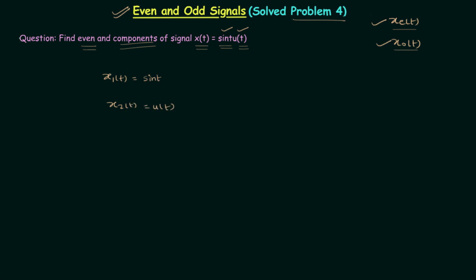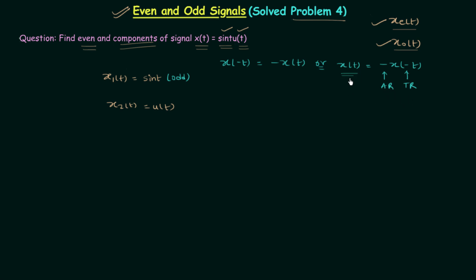We already know sin(t) is an odd signal because it is anti-symmetric about the y-axis. We can check the condition of odd signals: x(-t) = -x(t). First perform the time reversal and then perform the amplitude reversal, and if the signal is the same as the original signal then it is an odd signal. If you draw the waveform of sin(t) and perform time reversal then amplitude reversal, you get the same waveform. So sin(t) is an odd signal.